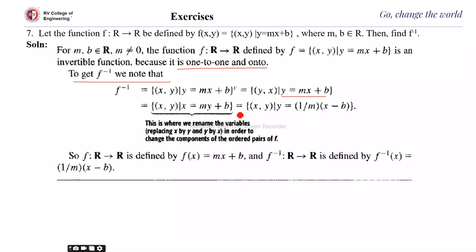Since we are interchanging, in the equation we replace x by y and y by x. So in place of y we write x, and in place of x we write y. This gives x = my + b, which is the ordered pair (x, y) such that y = (x − b) / m. Therefore y = (1/m)(x − b). This is how we find the inverse of the function.